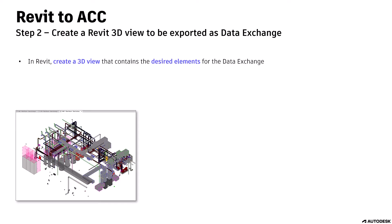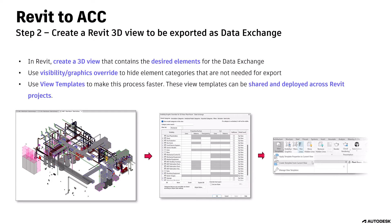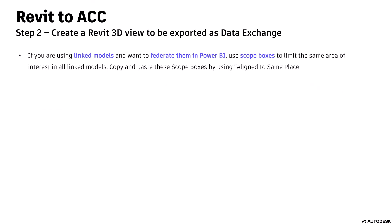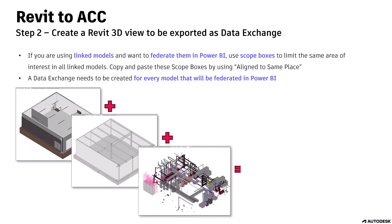Step 2: create a Revit 3D view to be exported as a data exchange. In Revit, create a 3D view that contains the desired elements for the data exchange. Use Visibility Graphics Override to hide element categories that are not needed for export. Use View Templates to make this process faster — these view templates can be shared and deployed across Revit projects. If you are using linked models and want to federate them in Power BI, use Scope Boxes to limit the same area of interest in all linked models. Copy and paste these Scope Boxes using Align to Same Place. A data exchange needs to be created for every model that will be federated in Power BI.